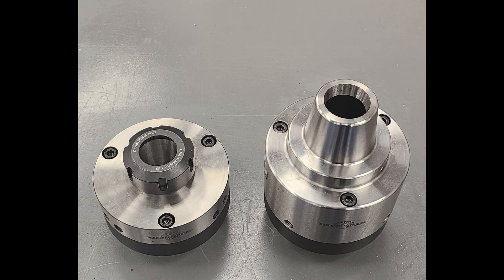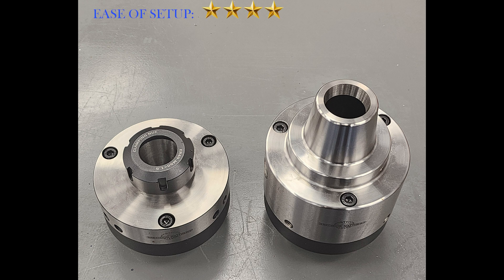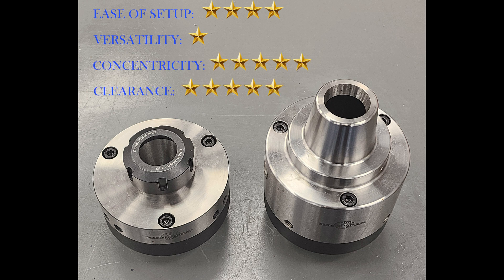We won't make a distinction between the two types of collet chucks, and we'll grade them together as a pair. For ease of setup, I'm giving them 4 stars. You can bump that up to 5 if you have the collet closure on your lathe. Versatility is a 1 though, as you can only hold round stock that is the dimension of the collets that you have on hand. Concentricity and clearance are both 5s, so as long as you're working with dimensional stock that you can hold in a collet, there's not much reason to use anything else.